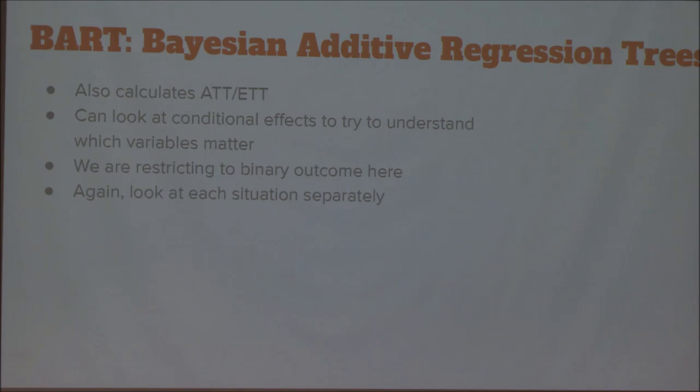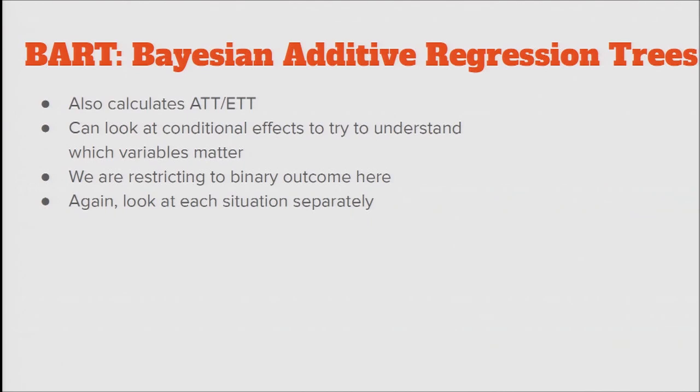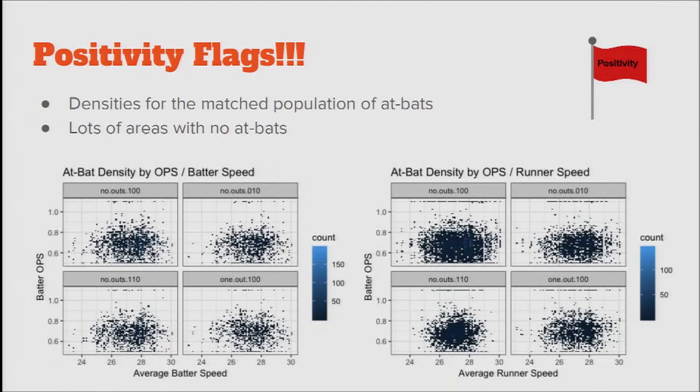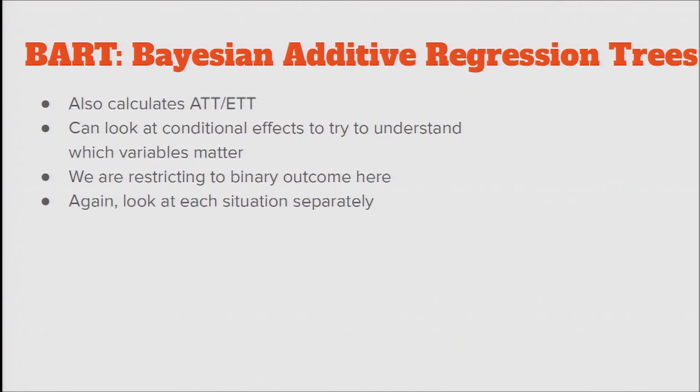The final method is BART — Bayesian Additive Regression Trees. BART is a really great technique that I've become a convert to. It's a very good way of imputing missing data or predicting outcomes you don't see. It takes all the information you have, works in a really flexible way, accounts for nonlinearities, picks up interactions, and is just really, really good at predictions. In causal inference we're interested in predicting counterfactuals, and BART does a very good job of that. We can also more easily pull out conditional effects, looking at variables at different levels of OPS and speed. We restrict to the binary outcome here because including continuous outcomes made the talk really long.